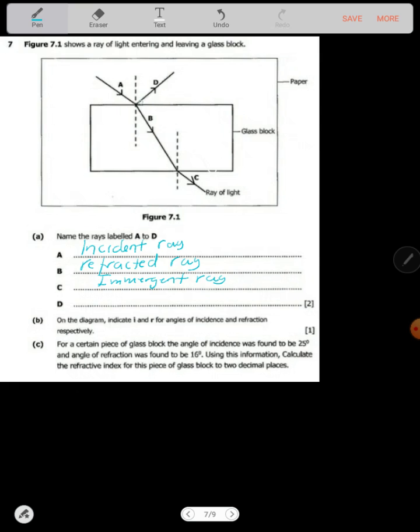Then D is just bouncing back like that. So when it comes like that, it bounces back. So D is what we call the reflected ray.